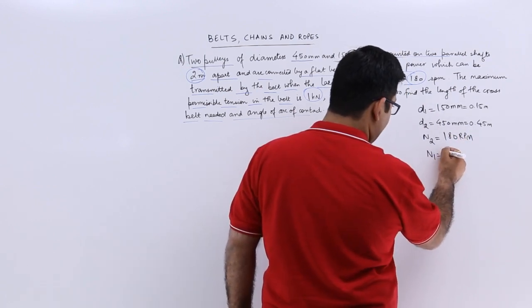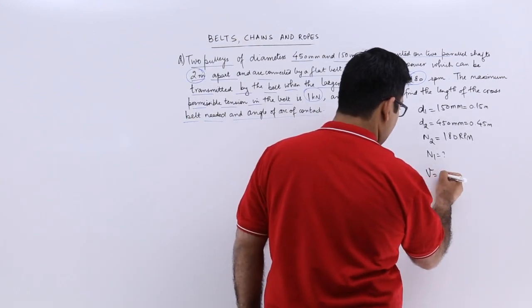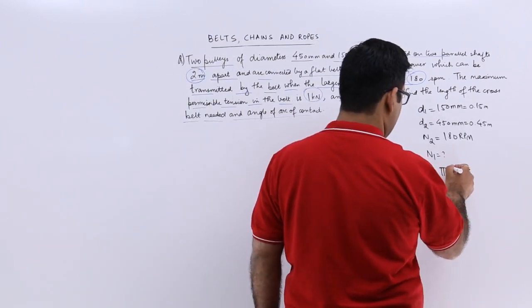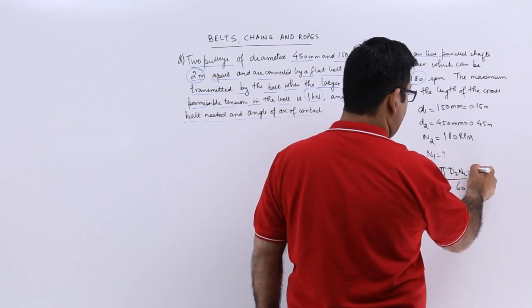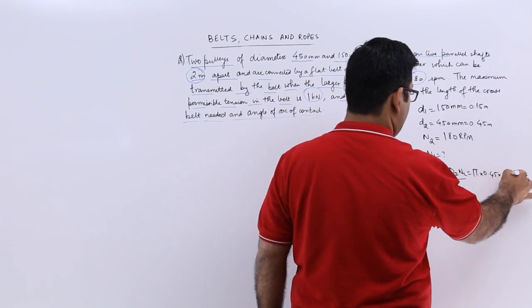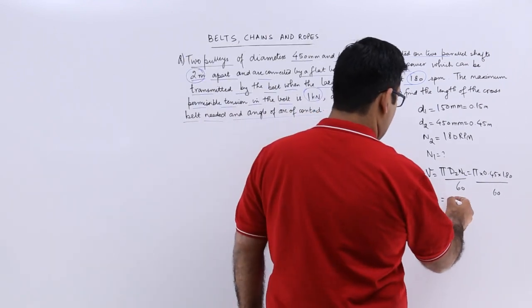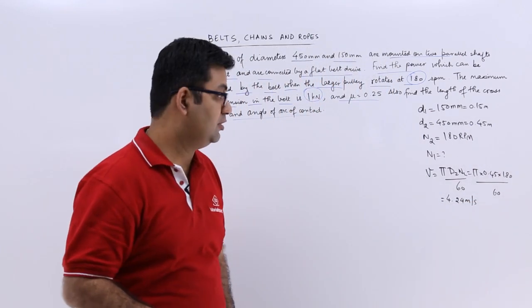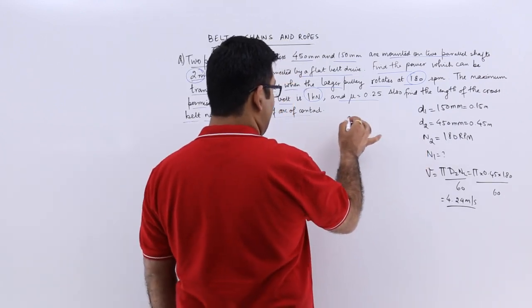N1 I need to find out. Let me find out V from here which is pi D2 N2 by 60. So pi D2 N2 by 60. You have pi D2 is 0.45, N2 is 180 by 60. This gives you 4.25 meters per second. So this is the linear velocity.